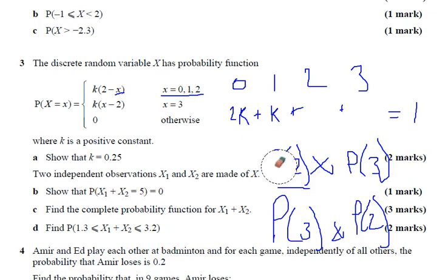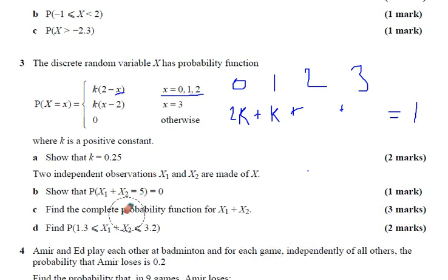So that's question B. Question C, find the complete probability function for x1 plus x2. The probability function is this thing. So what you could do is you could work out what the probabilities are for each number. So from our sample space diagram, we know that the possible outcomes are 0, 1, 2, 3, 4, 5, or 6. And you can use that sample space diagram that you drew to work out what the probability is for each of these values.